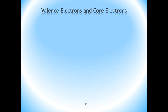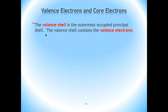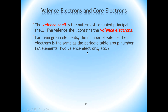Before we get to that, we need to make a distinction between two types of electrons in the electron configuration of an atom: the valence electrons and the core electrons. The valence electrons are those electrons that are occupying the outermost or the highest energy shell, or the shell with the highest n value. We call those electrons the valence electrons, and the shell that they're located in we call the valence shell.